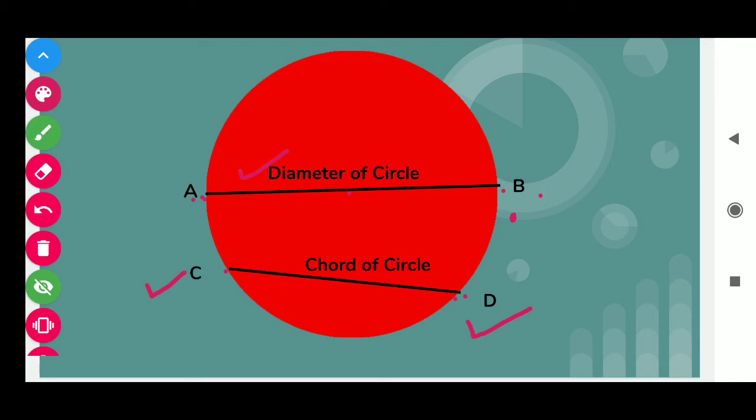If we draw infinitely many chords on this circle, because there are infinitely many points on the boundary, all are chords but AB is the longest chord of the circle. That's why it's called the diameter of the circle.